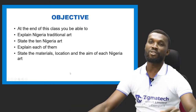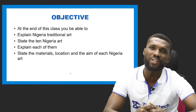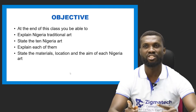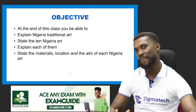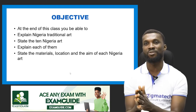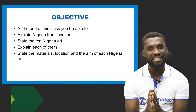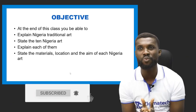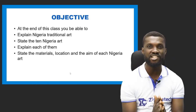During the course of this lesson, there are some things I want you to know. Number one, you will learn to explain Nigerian traditional arts. Number two, you'll be able to state the 10 Nigerian traditional arts. Number three, you will know each and every one of them. And number four, you'll know how to state their materials, the location where these works were made, and what the aim of each of these Nigerian arts is.